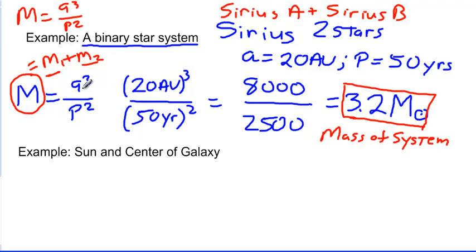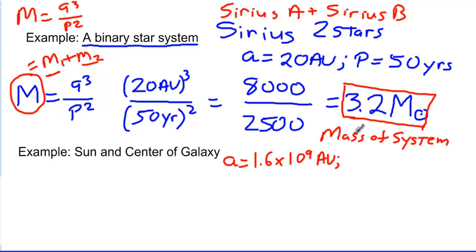One more example: the Sun orbiting the center of our galaxy — which lets us determine the mass of an entire galaxy. We can also apply this to a moon orbiting a planet to find the planet's mass. For the Sun orbiting the galactic center, A is about 1.6 times 10 to the 9th astronomical units — 1.6 billion AU. The period is about 225 million years, or 225 times 10 to the 6th years. We're dealing with some very big numbers.